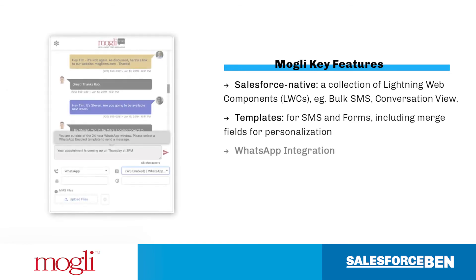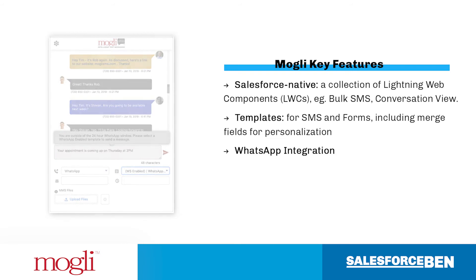WhatsApp can give organizations access to an international audience. There are specific requirements for messaging using WhatsApp, which Mowgli guides admins on setting up.